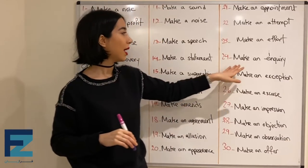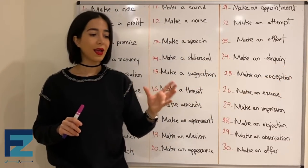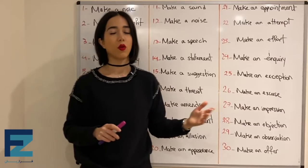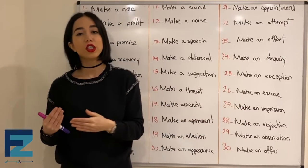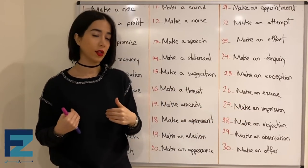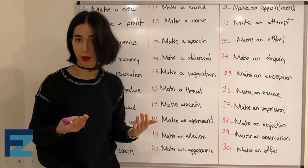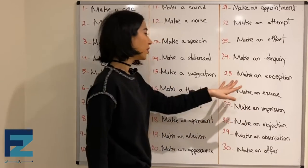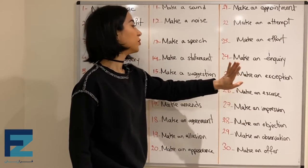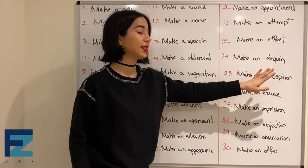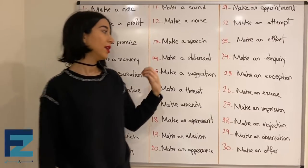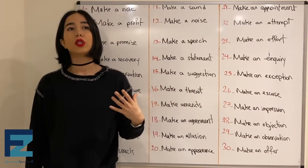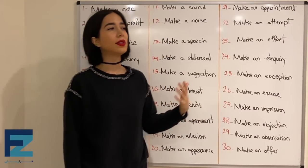Number twenty-four: make an inquiry — means to get information on something or about something, راجع به یه چیزی اطلاعات گرفتن یا سؤال پرسیدن — to ask questions about something.